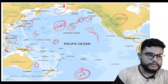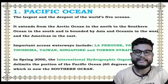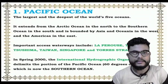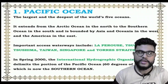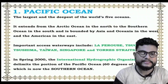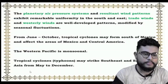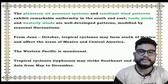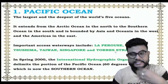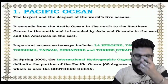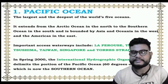Now some important data about Pacific Ocean — you can pause the video and read it yourself. Important water passages include the Taiwan Strait, Singapore, Torres Strait — Torres Strait goes towards Australia, connecting Southern Ocean and Pacific Ocean.